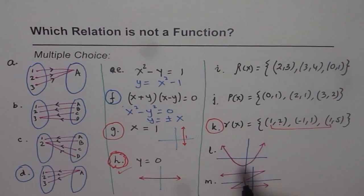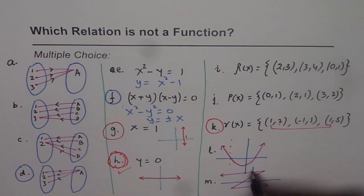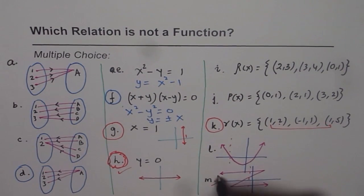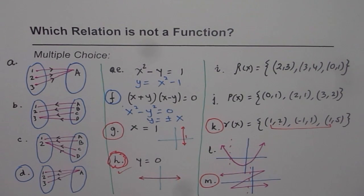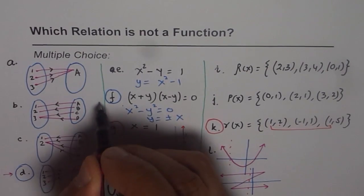For graphs, we draw a vertical line and if it crosses the graph at two or more points, it is not a function. In graph L it does cross at two points, so that is not a function. This way we can figure out from any given relation whether it is or is not a function.